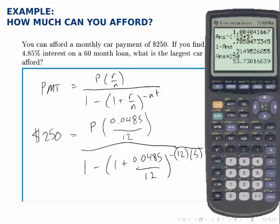What I have now is that 53.74 equals P times the rest of the numerator. So if I divide this number by what's in parentheses in the numerator, I'll have P.